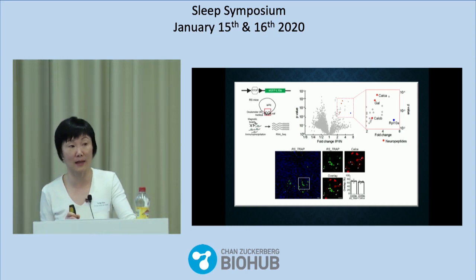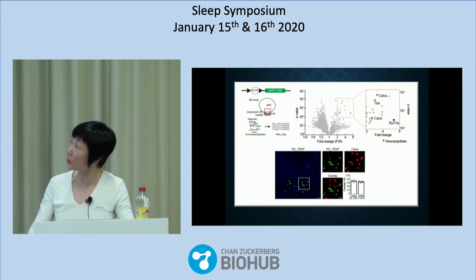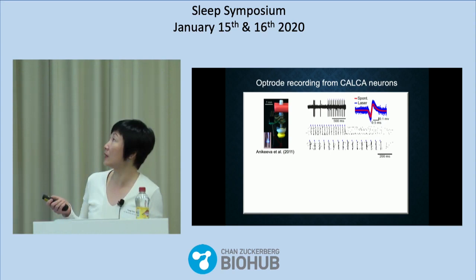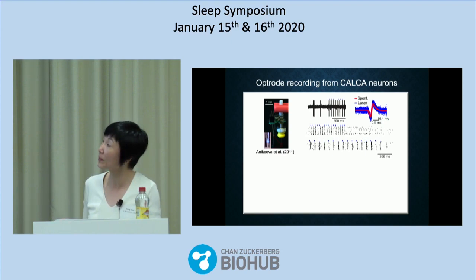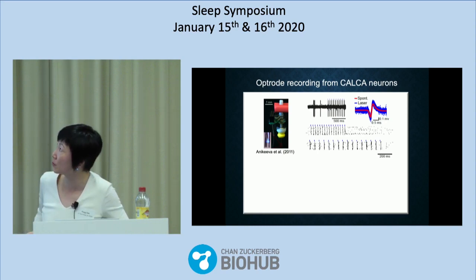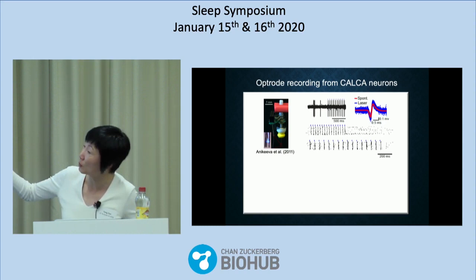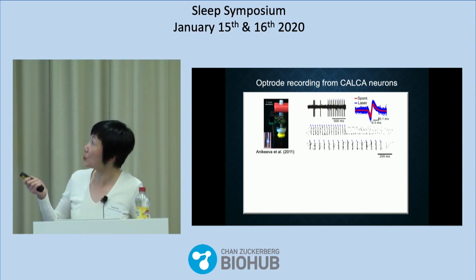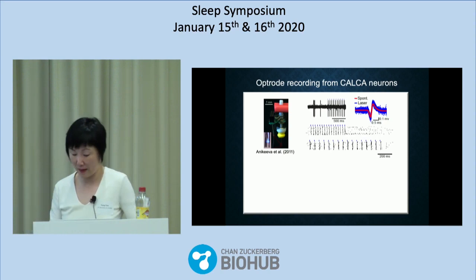We need to verify that these neurons are truly sleep-active, since Fos is not a perfect indicator of neural activity, so we did recordings. We optogenetically tagged the CALCA neurons using channelrhodopsin, using a CALCA-Cre mouse made by Richard Palmiter's lab. For recording, we used an optrode — an optic fiber surrounded by electrodes. Every time we turn on the laser briefly, this neuron fires reliably at a short latency, confirming it expresses channelrhodopsin and is therefore a CALCA neuron.